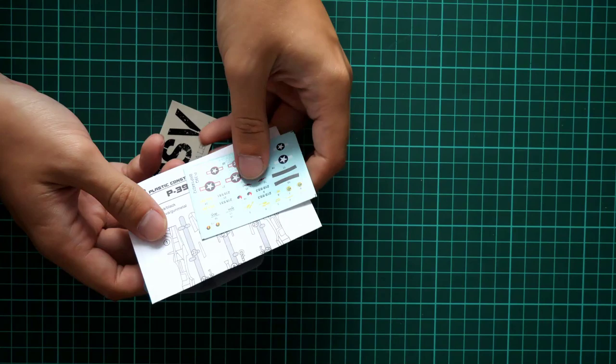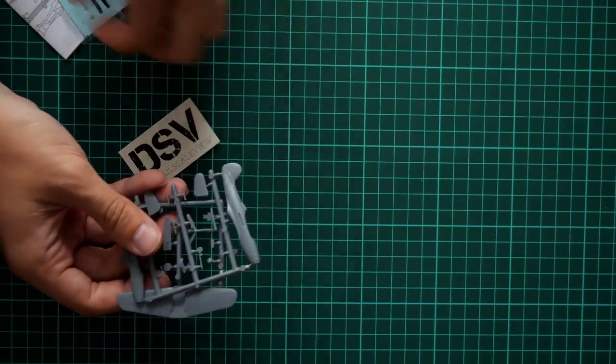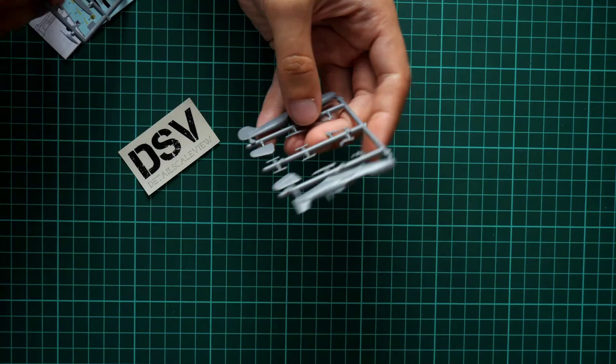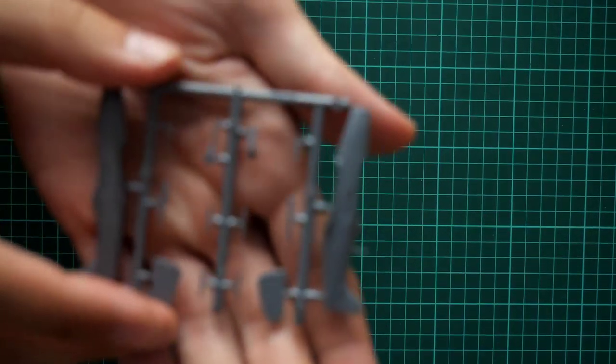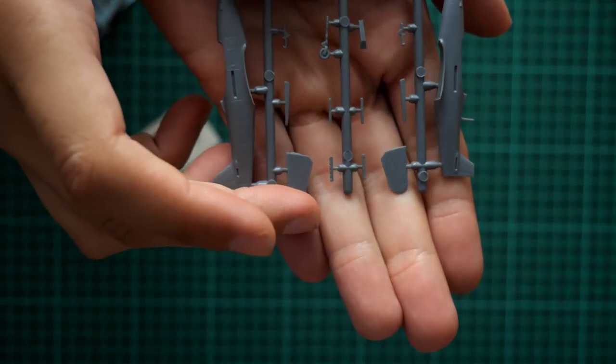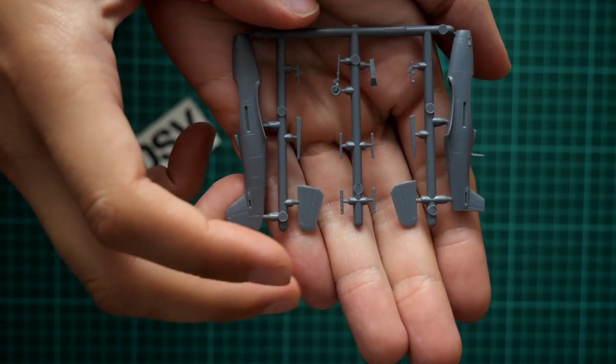Okay, and now we have two gray plastic sprues and also one transparent plastic sprue. So here we have the first one. Let me position it somehow in the frame. Now you should be able to see it.